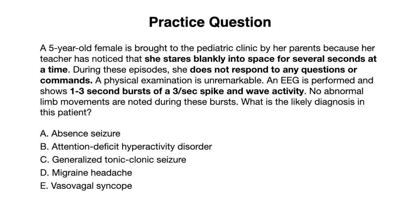Let's look at some of the key findings here. We have a 5-year-old female, so she fits the age range for an Absence seizure. We're told that she stares blankly into space for several seconds at a time, but the key finding is that she does not respond to any questions or commands — so this is more than just daydreaming; this is an impairment of consciousness. And then an EEG is performed which shows the spike and wave activity that we discussed earlier. So the answer here is A, Absence seizure.